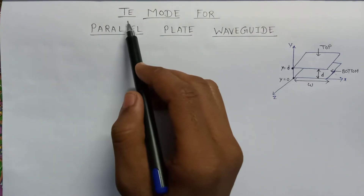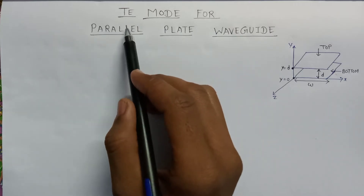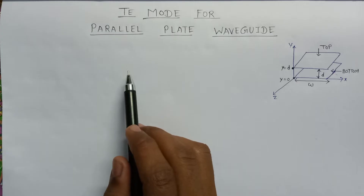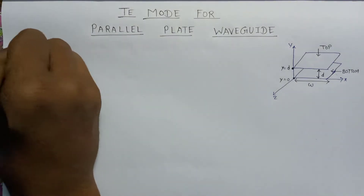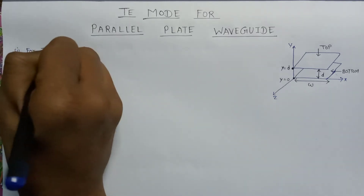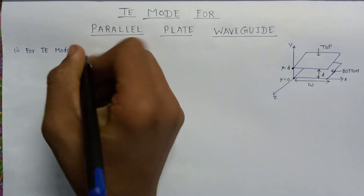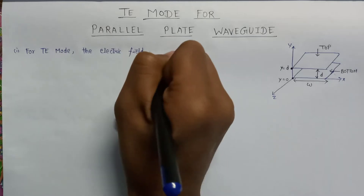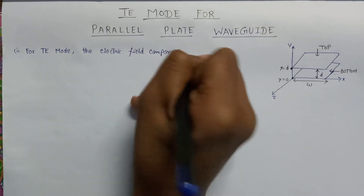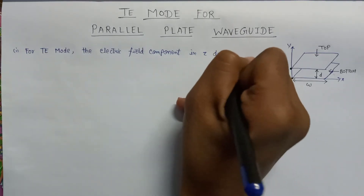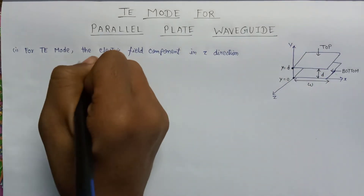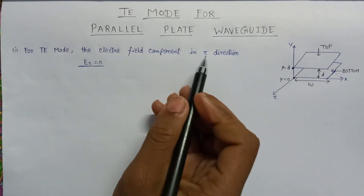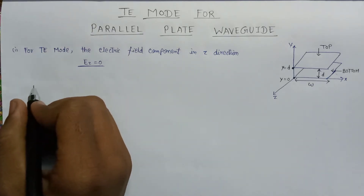Now let us have a look at TE mode. TE mode stands for Transverse Electric mode, meaning that all the electric fields are transverse to the direction of propagation of the wave. There will be no electric field in the z-direction. For TE mode, the electric field component in the z-direction, represented as Ez, is equal to zero, because it does not contain an electric field component in the z-direction.